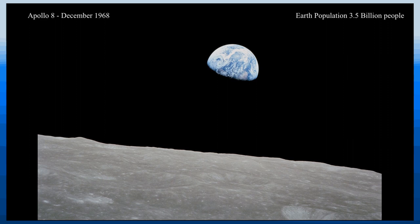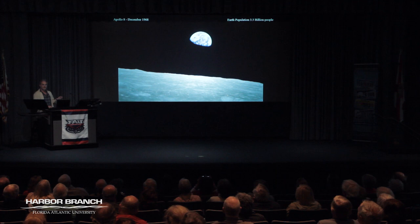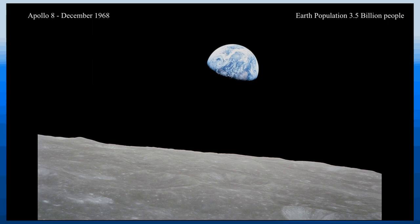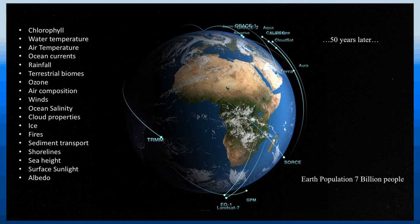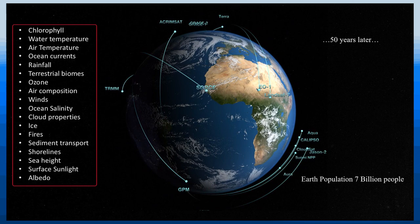The origins of the Earth observation program really go back to the 1960s with the NASA Apollo program. This was a photograph taken in December of 1968 — the 50th anniversary of this picture. This is probably the very first remote sensing picture of Earth, and it was these pictures that inspired scientists and engineers to put planetary sensors on satellites to look at the Earth. The population of the planet was three and a half billion people then, and now 50 years later there are many satellites orbiting the planet making a variety of measurements.